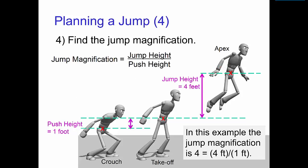Step four, find the jump magnification. In this example, the jump height is 4 feet and the push height is 1 foot, so the jump magnification is 4. This is an unusually high jump for an ordinary human, but it's physically possible.